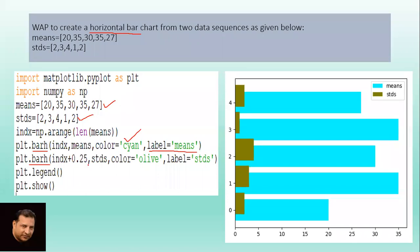We have to create bar chart for two data sequences, so we have another plt.barh with index plus 0.25 just to give some space. You can try it with different values. Then std is standard deviation. This horizontal bar chart has been created for two data sequences with this legend.